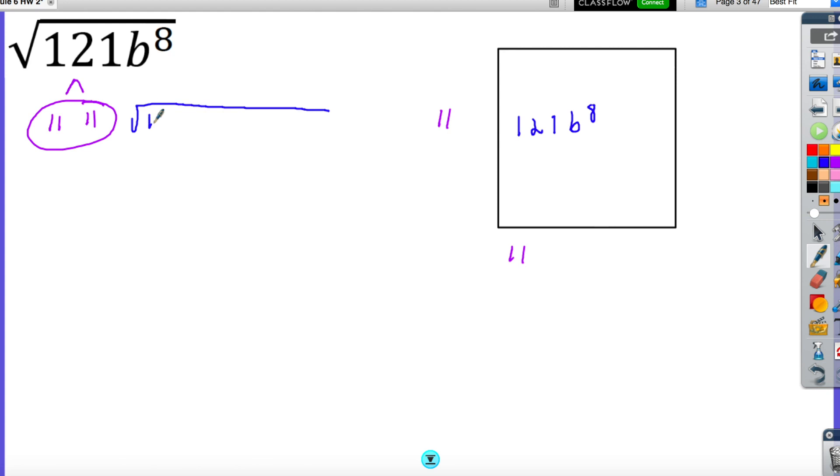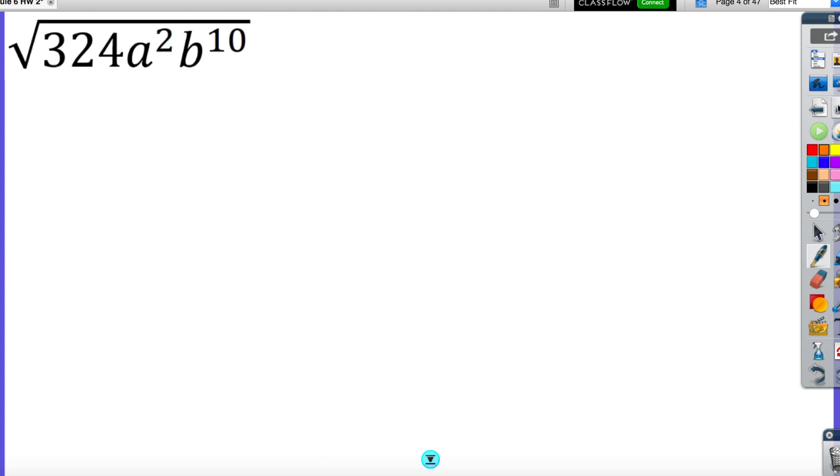If I looked at pairs, I would have 1, 2, 3, 4 pairs. So that means I would have b to the 4th power on both of these. Another easier way to do this is whatever the number is inside the square root, if it's a square root we're looking for groups of 2, you can just divide the exponent of a variable by 2, and that will be the number on the outside. That's how many pairs you will have.